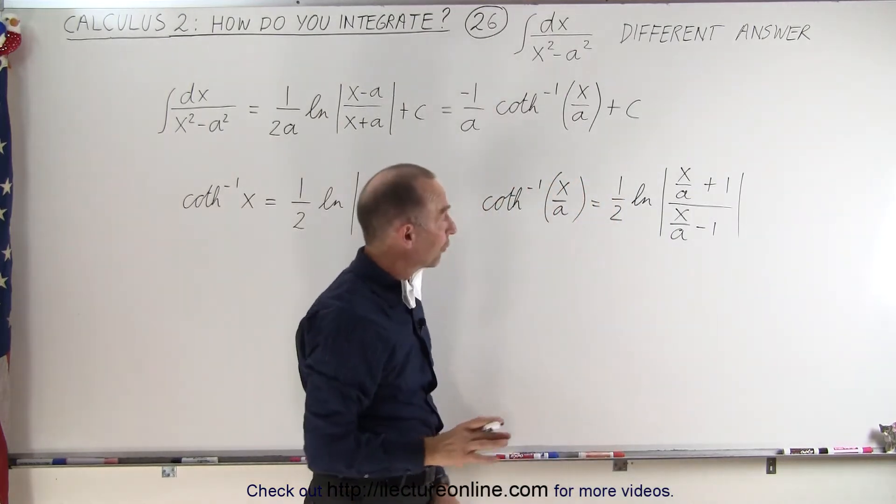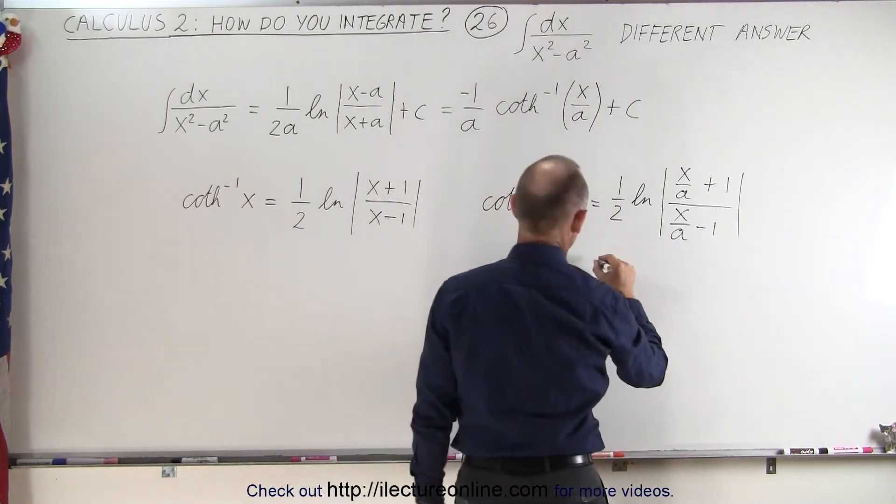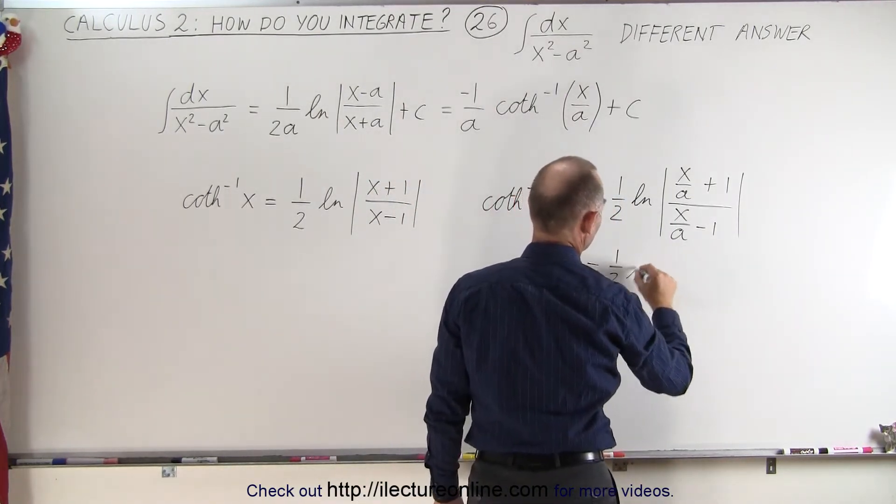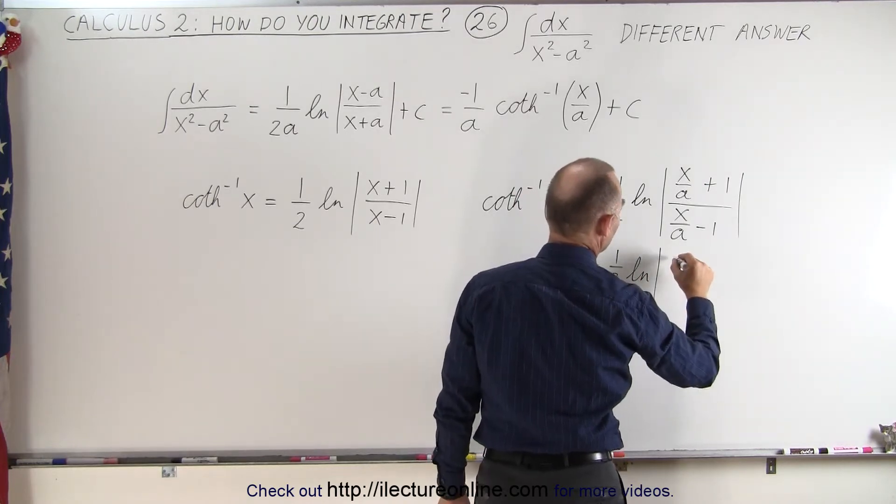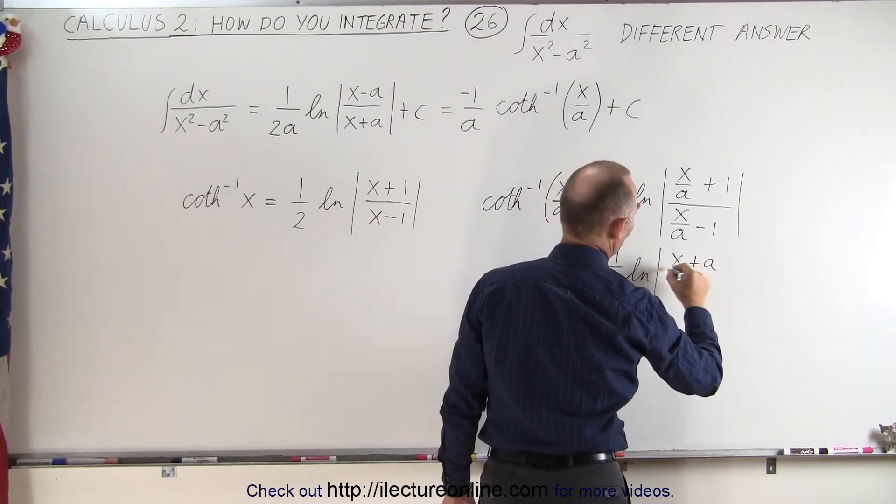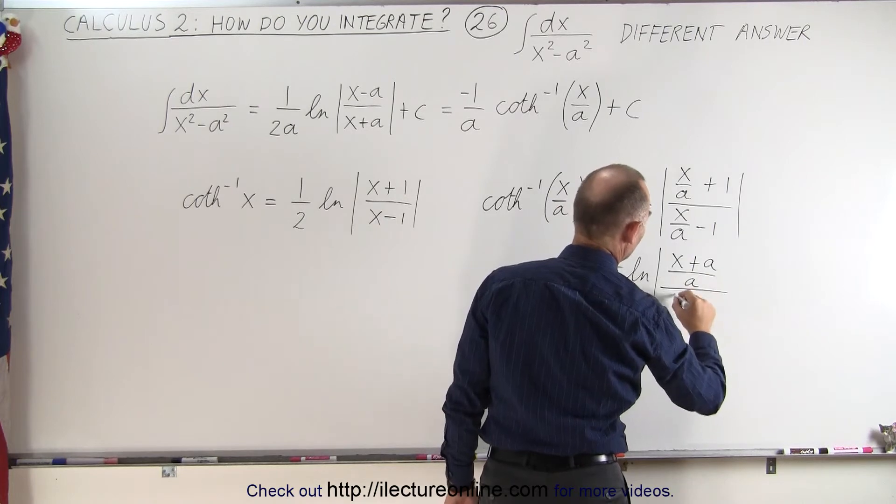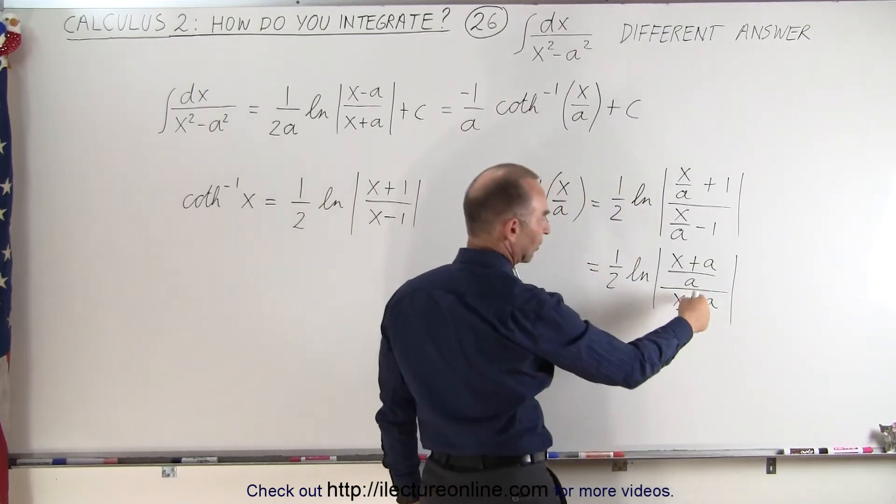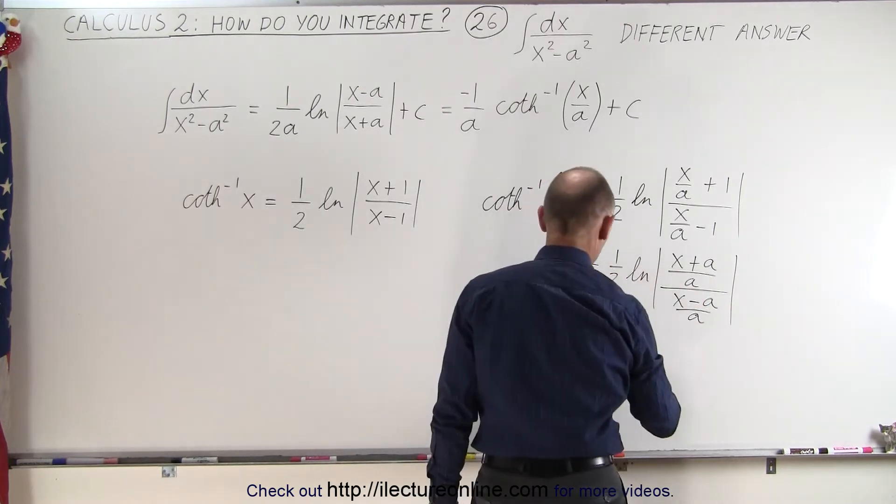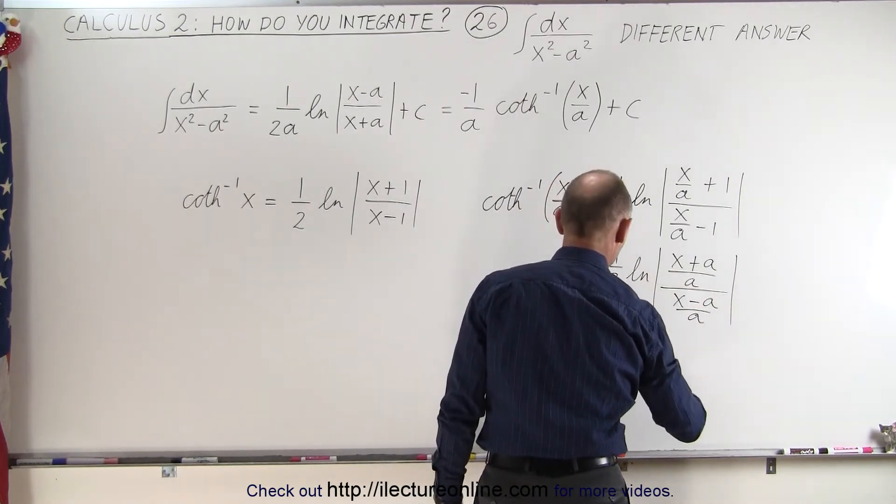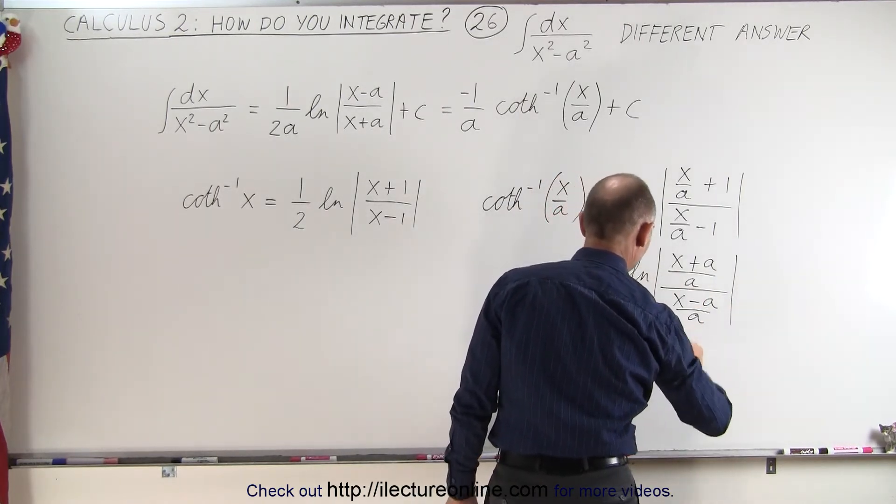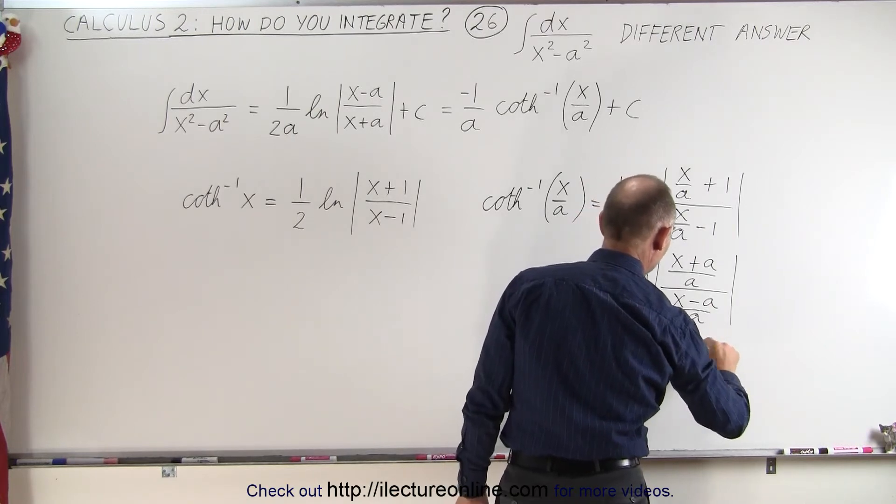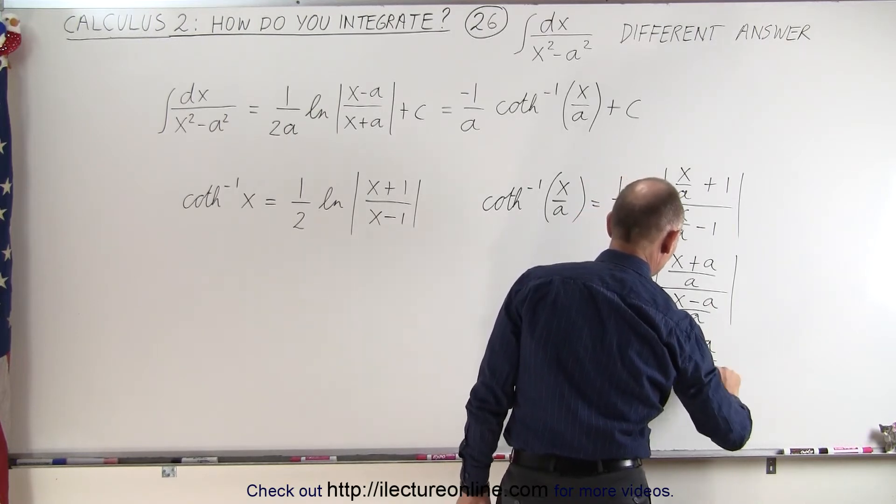And then we want to write everything over a common denominator. So this is equal to one half times the natural log of x plus a over a divided by x minus a over a. And then realizing here that the a's cancel out, so this becomes equal to one half times the natural log of x plus a divided by x minus a.